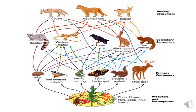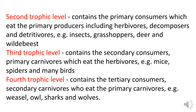This food web contains the producers and the decomposers, the primary consumers, secondary consumers, and the tertiary consumers. As you can see, they are made up of many organisms that are linked together by eat-and-eaten relationships. The second trophic level contains the primary consumers which eat the primary producers, including herbivores, decomposers, and detritivores — like insects, grasshoppers, deer, and wildebeest.